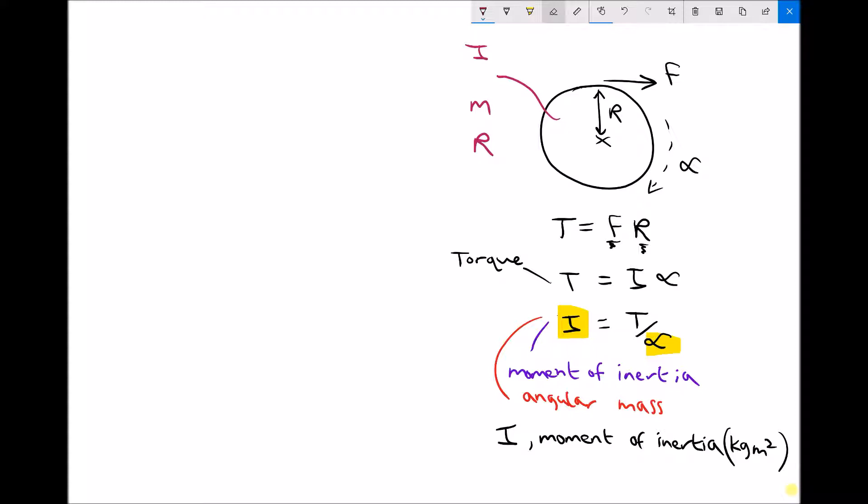So here we have a solid disc. And the equation for moment of inertia, for a solid disc, is just a half m r squared. That's for a solid disc. There's various different equations for different objects.